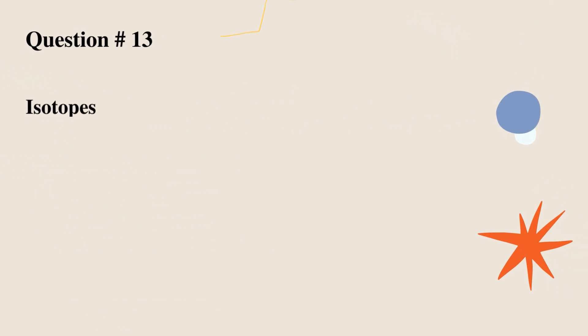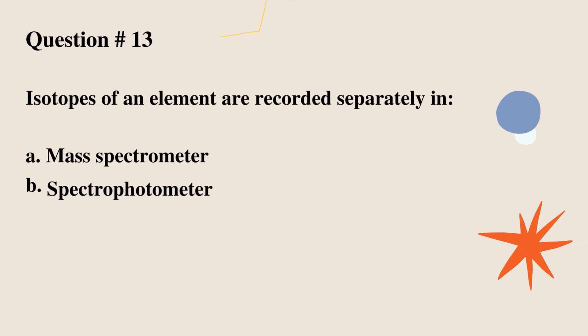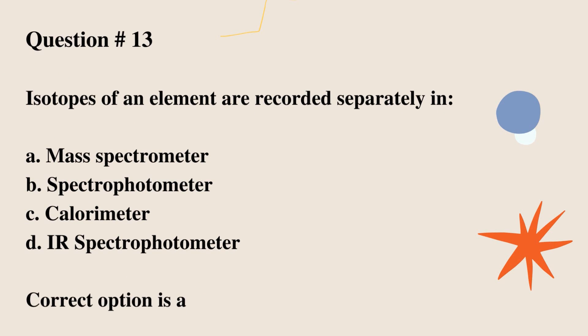Question number 13. Isotopes of an element are recorded separately in: A. Mass spectrometer. B. Spectrophotometer. C. Calorimeter. D. IR spectrophotometer. Correct option is A.